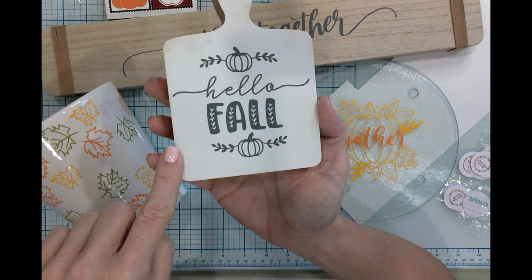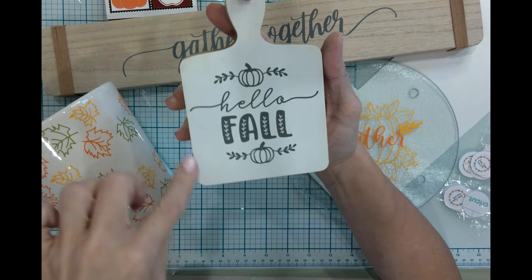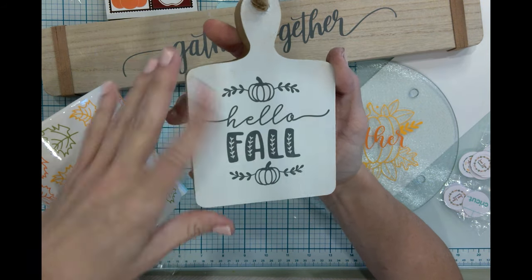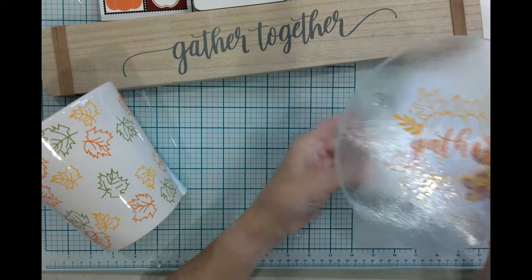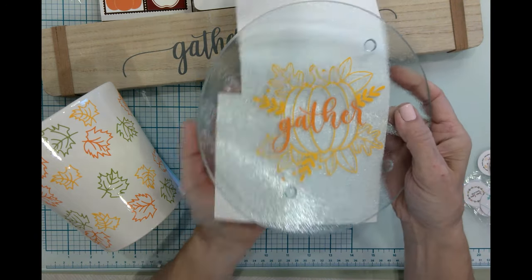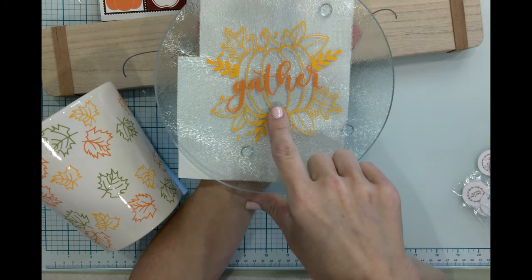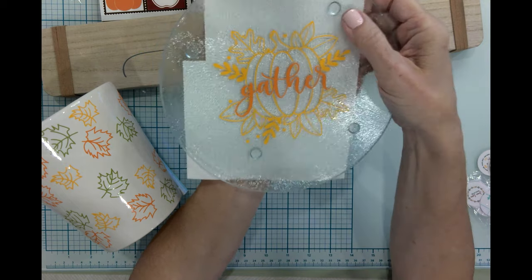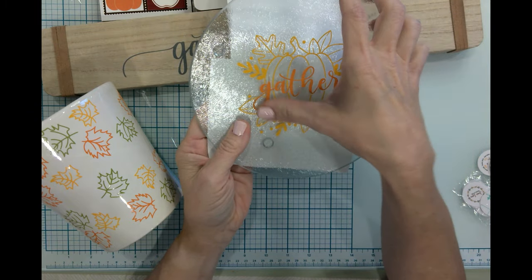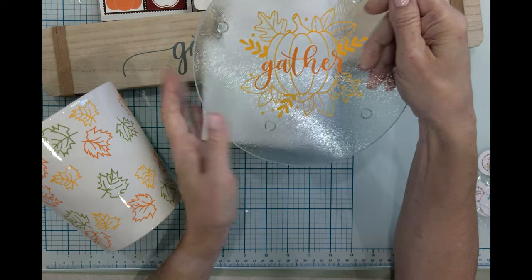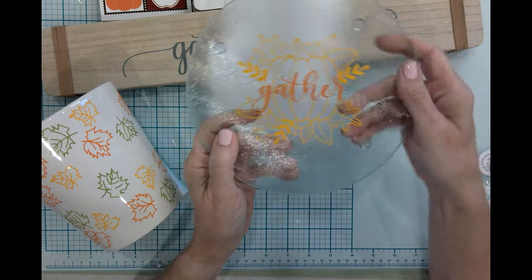Then we had here, this was the cutting board slash trivet from Dollar Tree and we just added some vinyl. Again, I wish I had mirrored this so that I could put it underneath, but that's okay. This will be great for decoration or we can just lay something on top of that, but it is not food safe. We will not be putting little snacks on here unless they are wrapped items. But that is so cute, and these would make great gifts. Any of these here.